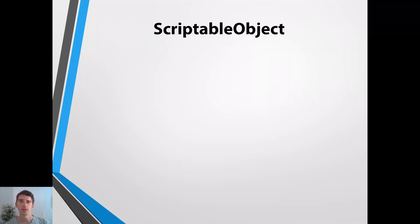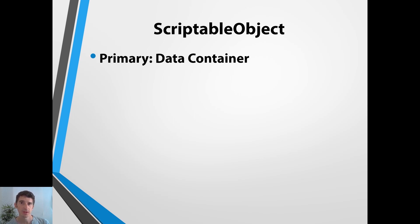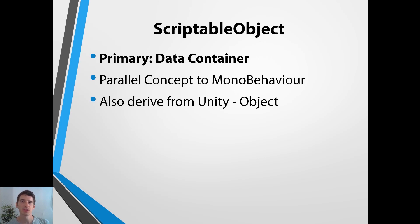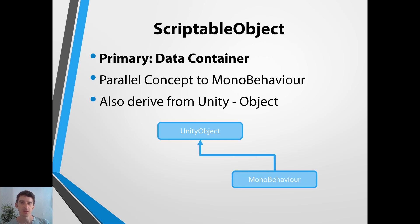Let's talk about ScriptableObjects. They're primarily a data container and they should not contain functionality — be wary of that because it might be tempting to put functionality in there. They are a parallel concept to MonoBehaviours and also derive from the Unity Object. So the hierarchy looks like this: Unity Object, then MonoBehaviour derived from it, and ScriptableObject as a sibling to MonoBehaviour. MonoBehaviour is more the functionality of the game, and the ScriptableObject would be the data of the game.